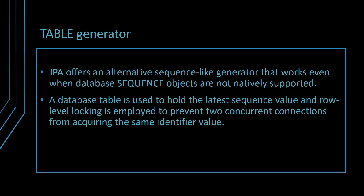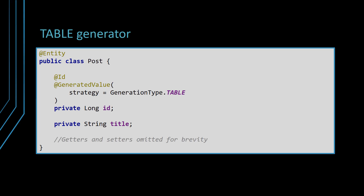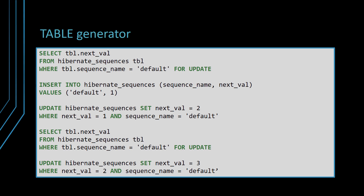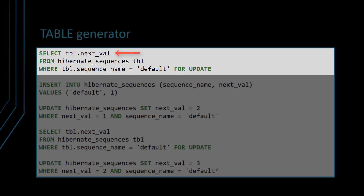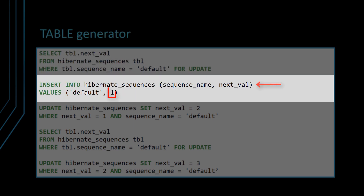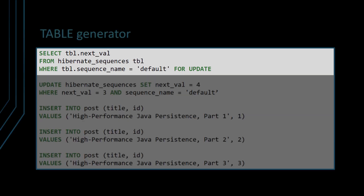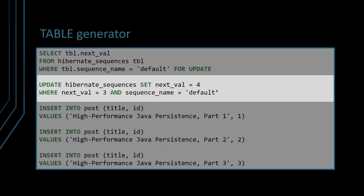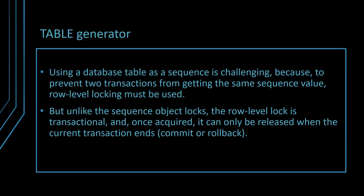JPA offers an alternative sequence value generator that works even when the database sequence objects are not natively supported. A database table is used to hold the latest sequence value and row-level locking is employed to prevent two concurrent connections from acquiring the same identifier value. The entity identifier mapping to a table-based sequence generator is done via the table strategy of the generated value annotation. For the table identifier generator, Hibernate is going to use a separate database table to hold the current sequence value. When persisting an entity, the current value is fetched while also locking the underlying table generator record. If the table generator does not find any associated record, one is being added with a start value of 1. After getting the current sequence value, the counter is incremented using a separate update statement. Using a database table as a sequence is challenging because to prevent two transactions from getting the same sequence value, row-level locking must be used.